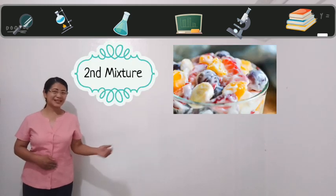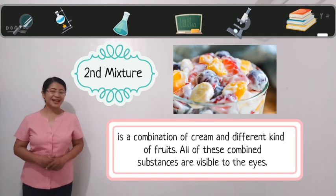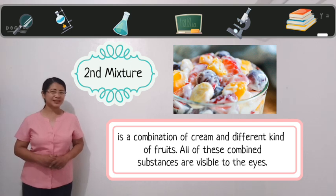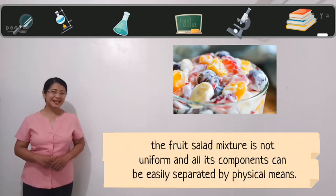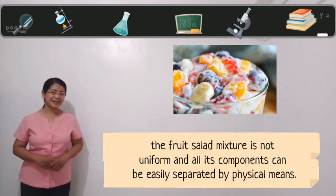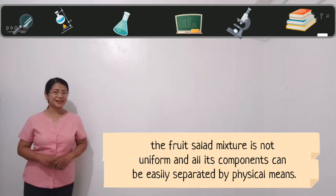The second mixture is a combination of cream and different kinds of fruits. All of the combined substances are visible to the eyes. The fruit salad mixture is not uniform and all the components can be easily separated by physical means.